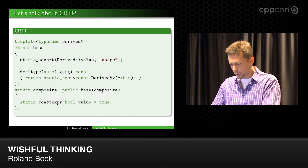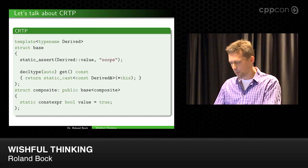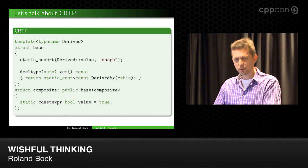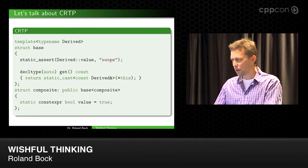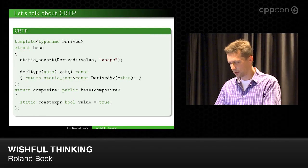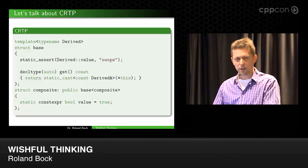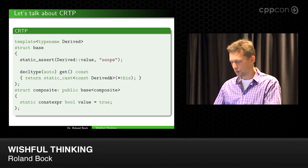And third, if you want to return a reference to this object or a pointer, you would use some kind of static cast. And if you see static cast in the code, you normally know there's something fishy going on here. So, three reasons why this is the wrong model to achieve what we achieve with CRTP.